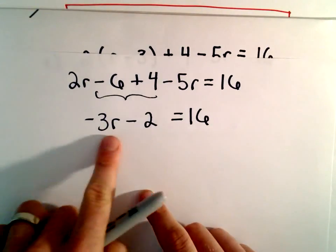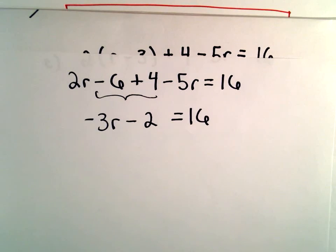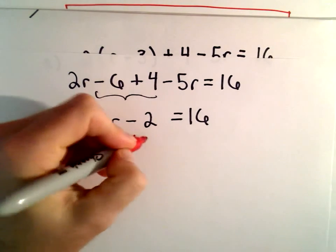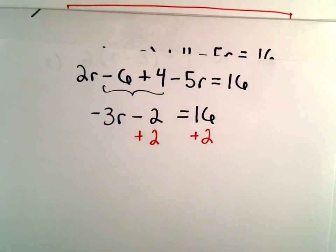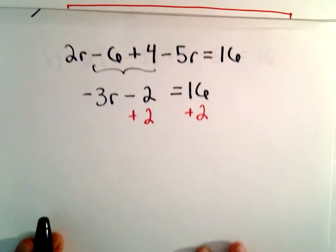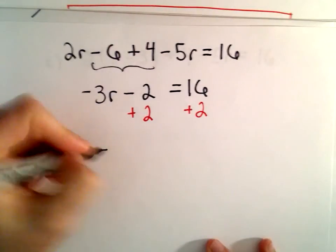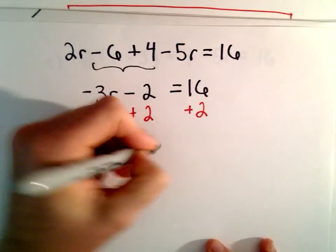I want to get the term involving r by itself. So what I'm going to do is add 2 to both sides. Since I'm subtracting 2, we'll add 2. We'll have negative 3r equals 18.